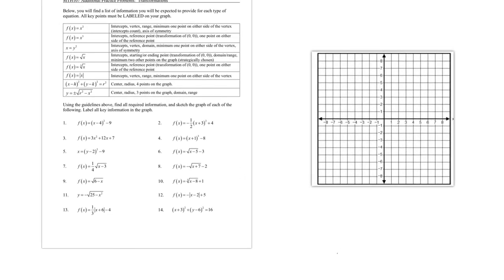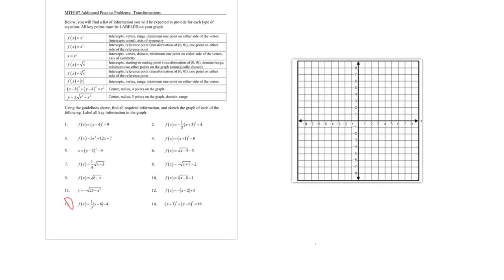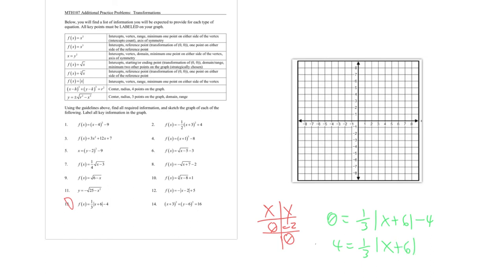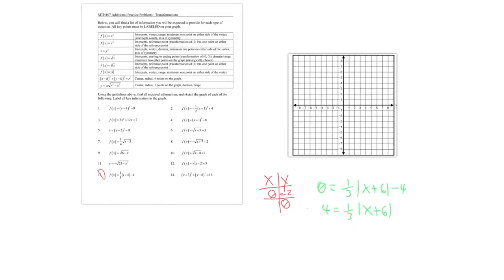Problem 13 is another absolute value function. For intercepts: when x = 0, it's |0 + 6| = 6, one-third of 6 is 2, minus 4 is negative 2. So the y-intercept is (0, -2). Setting y = 0: ⅓|x + 6| = 4, so we need to solve that absolute value equation next.